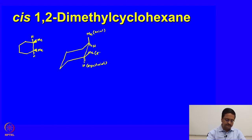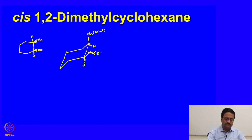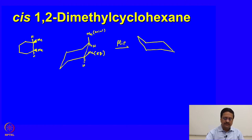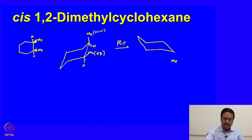This methyl is in the equatorial position. If we try to flip this molecule, this methyl group on flipping should flip like that. This methyl group which is up here should come down, the hydrogen associated should be up, the methyl there should be down and the hydrogen there should be up.